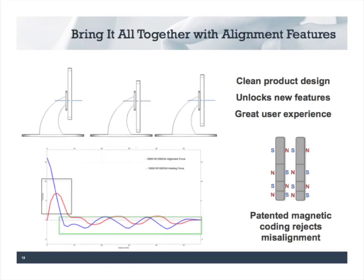We're almost done with our product design. We've got a product that comes together, feels good, and holds securely. But there's something missing — we want it to go together the same way every time. The user can put it wherever they want, and maybe that's okay, but maybe we have a charging feature or some other connection requirement. There is a family of polymagnets that answers that design requirement as well. Correlated Magnetics has long done self-aligning magnets, which borrow from coding theory and communications. These magnets reject misalignment so that they basically only go together one way.